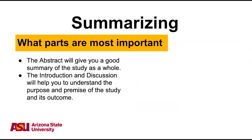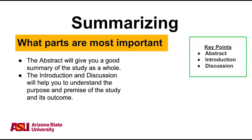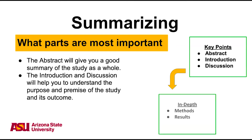So, now that we know about the different parts of a journal article, let's talk about how to efficiently get the information you need. Starting with the abstract should give us a pretty good idea of the article's main points, but it's important to go more in-depth. Reading the introduction will give you a better idea of the purpose of the study. Once you understand the introduction, you can jump down to the discussion to read about the findings in more detail. After these three steps, you can begin looking into the methods and results section to give you a complete image of the study.